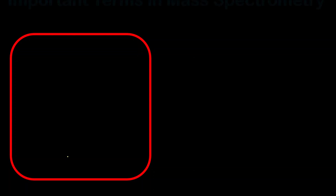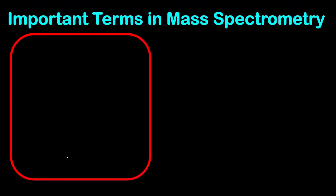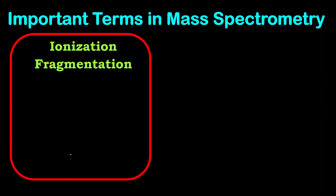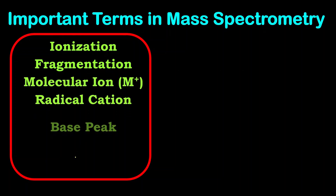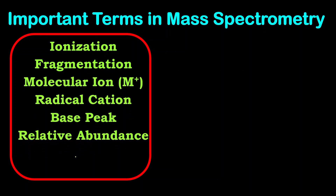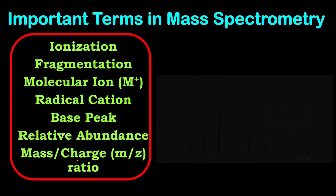Hello everyone, welcome to Chemison Complete Chemistry. Today's video we are going to discuss some of the important terms used while studying mass spectrometry — like what is ionization, fragmentation, molecular ion, radical cation, base peak — and in the mass spectrum, relative abundance and mass-to-charge ratio.